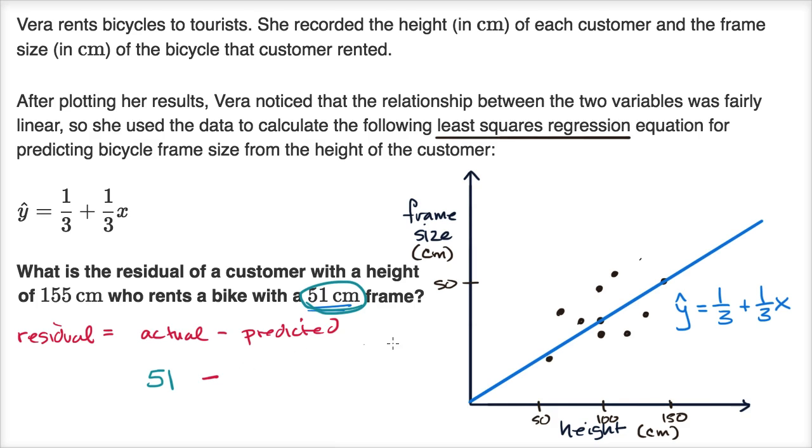But what is the predicted? Well that's where we can use our regression equation that Vera came up with. The predicted is going to be equal to one third plus one third times a person's height. Their height is 155. That's the predicted.